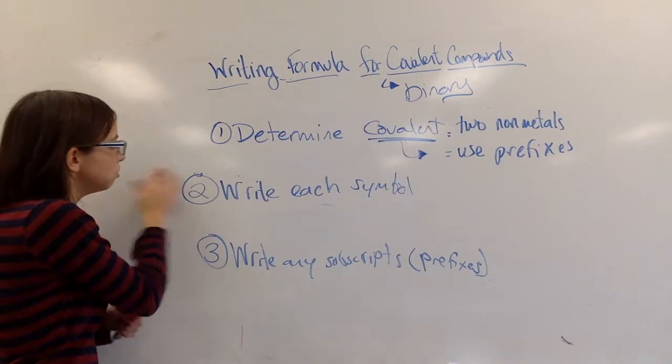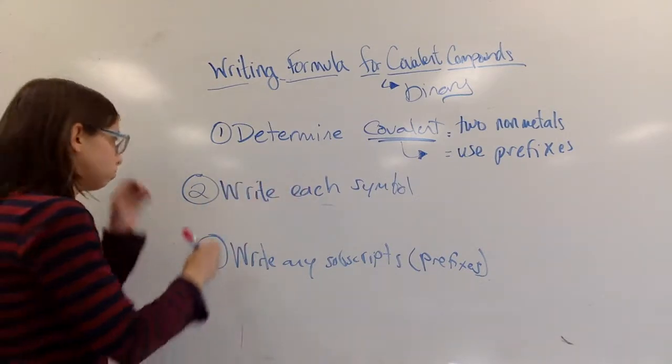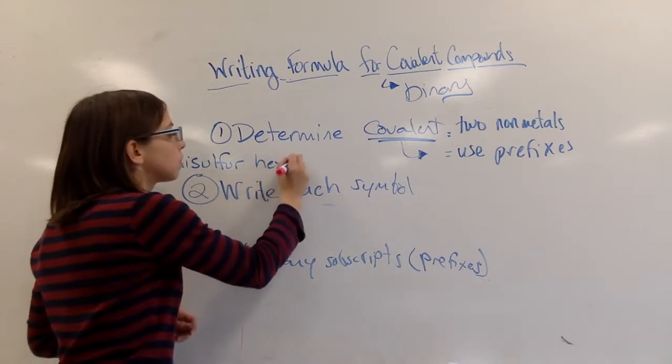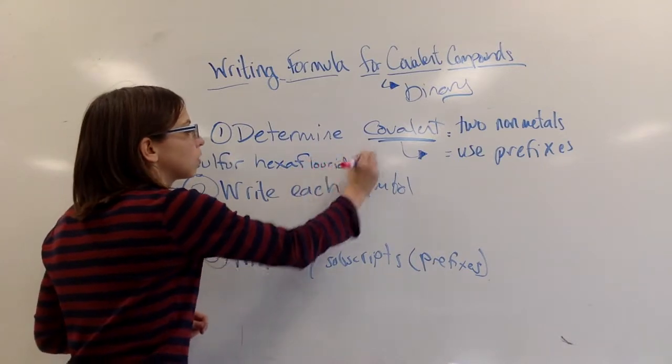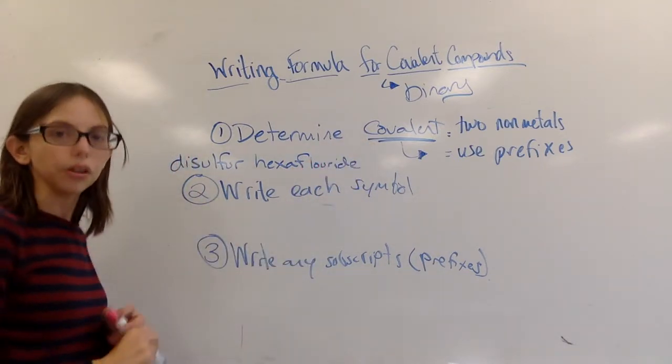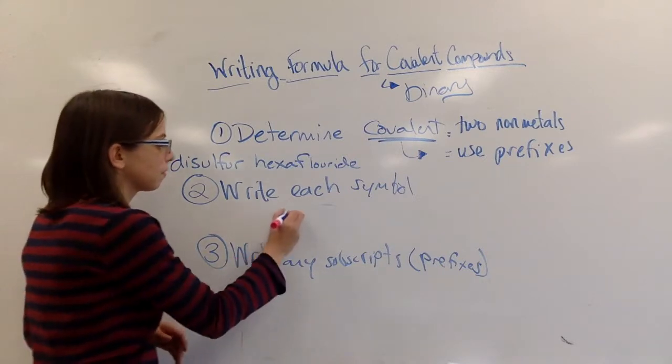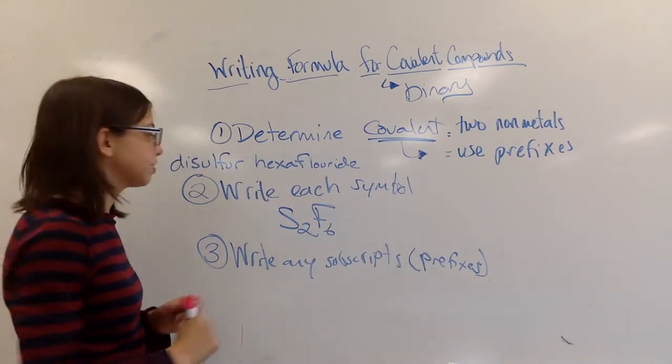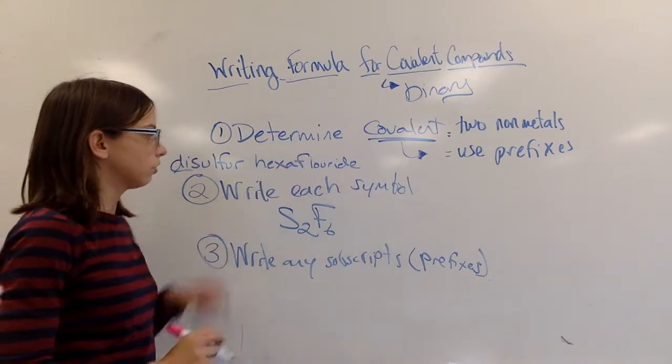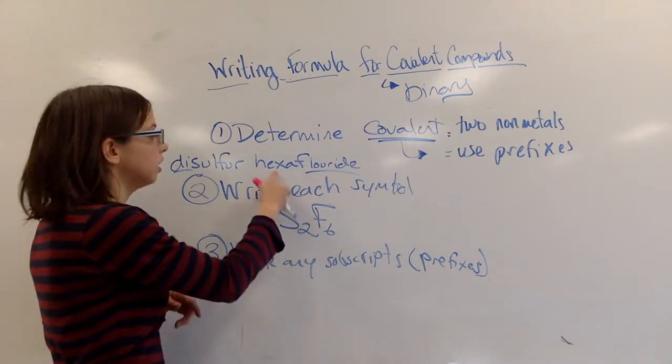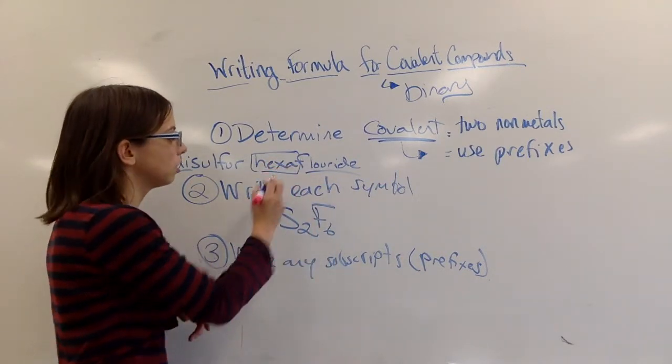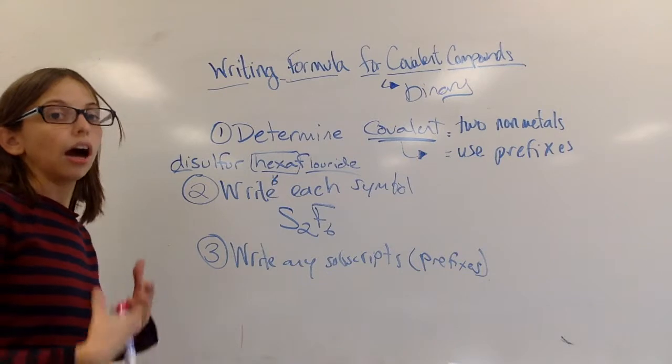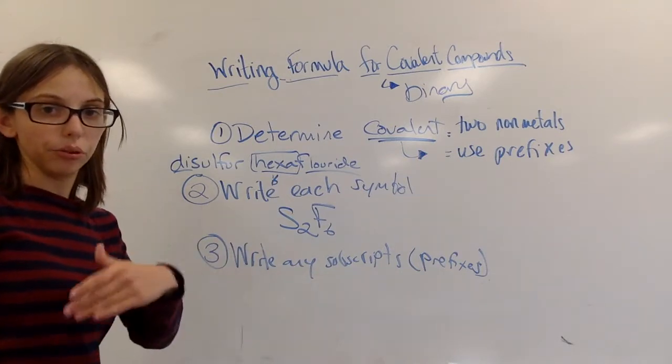All right. Let's see if you can do one on your own. Disulfur hexafluoride. Pause the video if you need to. Come on. And I know that is going to be S2F6. Disulfur hexafluoride. Fluoride is fluorine. F hexa 6. You have to know the prefixes in order to kind of understand how to write the formulas. If you don't have those memorized, I would suggest you do that first for prefixes one through ten.